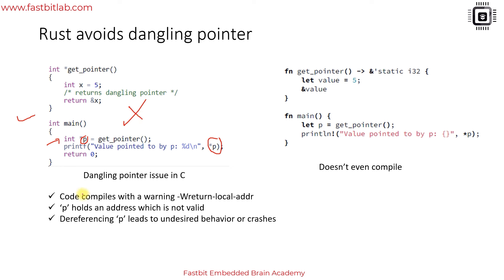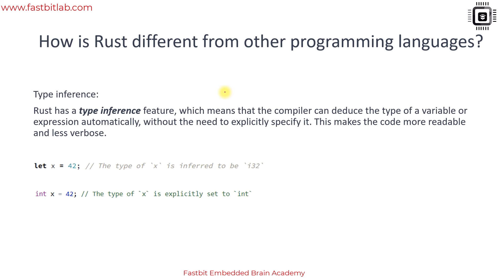What this p contains is an invalid address and if you try to dereference that invalid address that would cause undesired behavior or even crashes. This is wrong code and such codes are possible in C because C would not throw any error unless you consider warnings as errors. But in Rust such dangling pointers are not possible at all because the compiler detects that and the program will not compile.